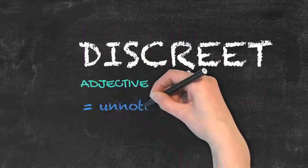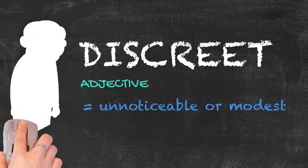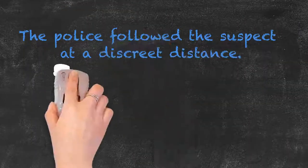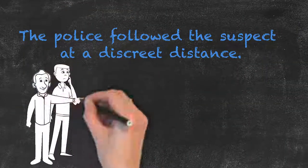The word discreet is an adjective used to describe something unnoticeable or modest. For example, the police followed the suspect at a discreet distance.